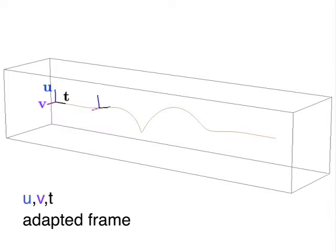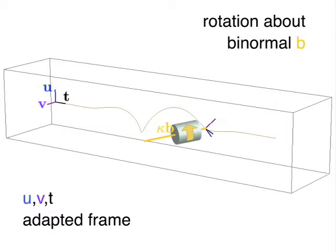We present a discrete model of thin, flexible rods. Our model relies on the notion of parallel transport, which maps vectors along a smooth curve in a twist-free way.